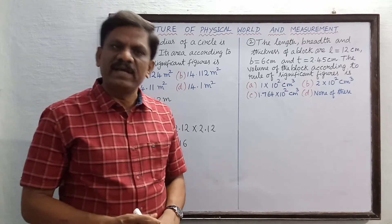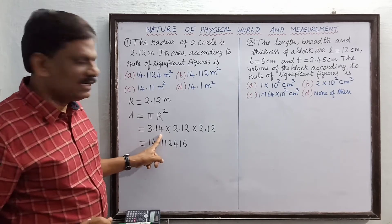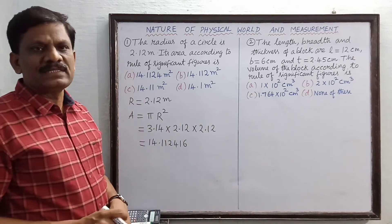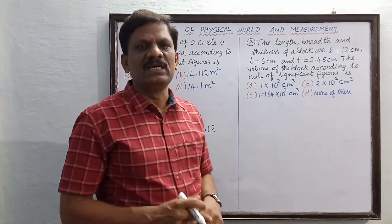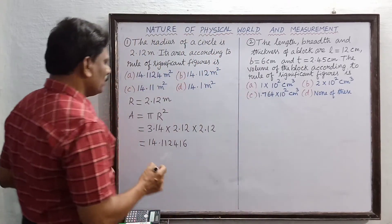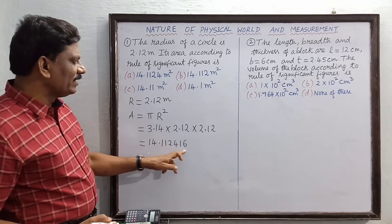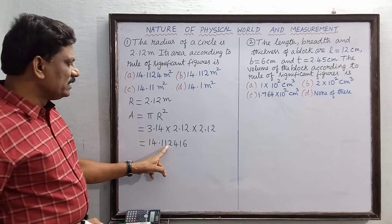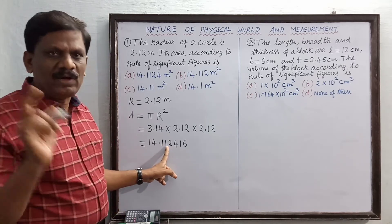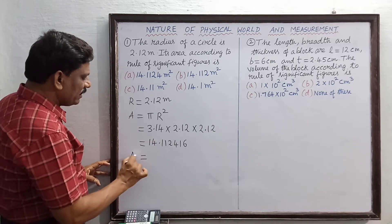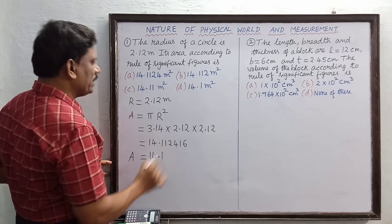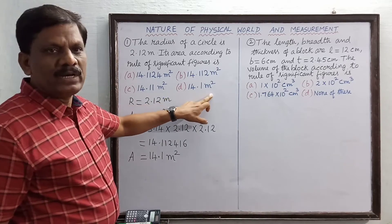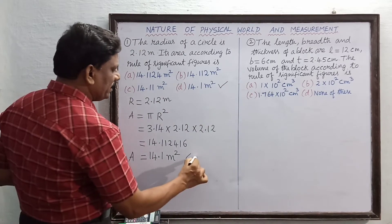The three numbers we multiplied — 3.14, 2.12, and 2.12 — each have three significant figures. When multiplying, the answer must contain the least number of significant figures among the given numbers, which is three. The raw result 14.112416 has eight significant figures, but only three are permitted. The fourth digit is less than five, so we drop everything after 14.1. Therefore the area is 14.1 m², which is option D.